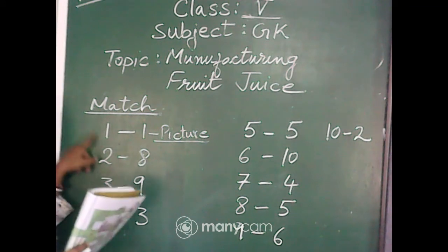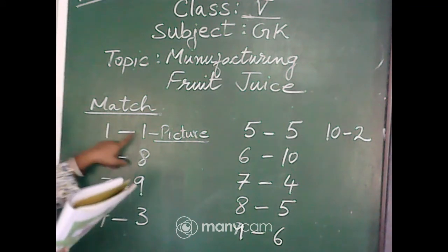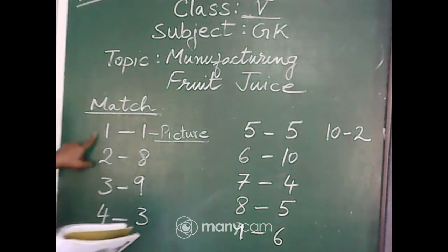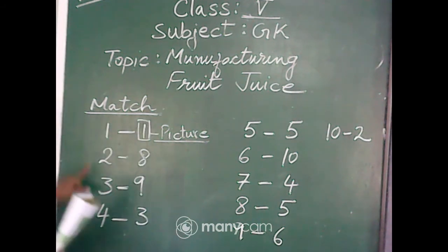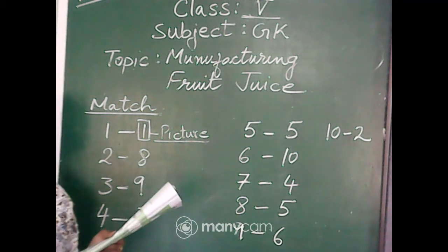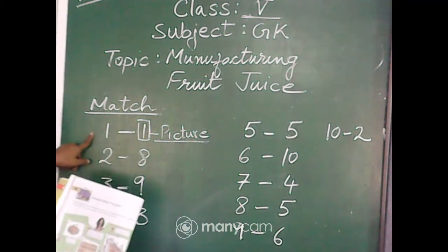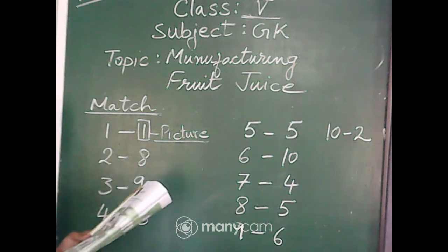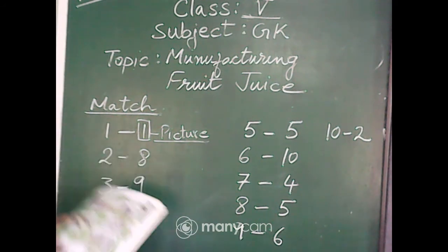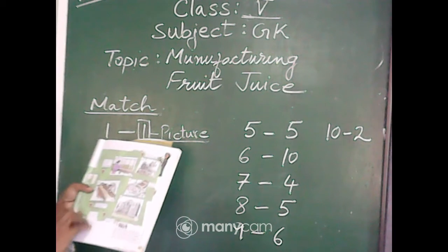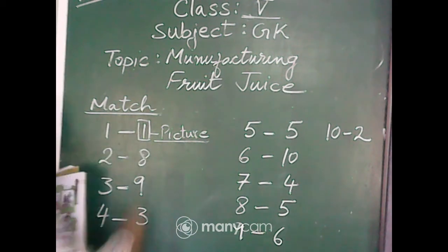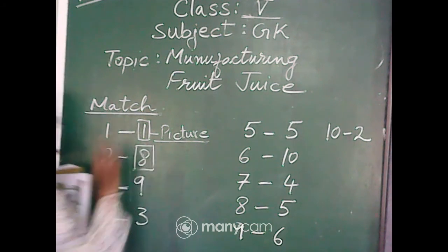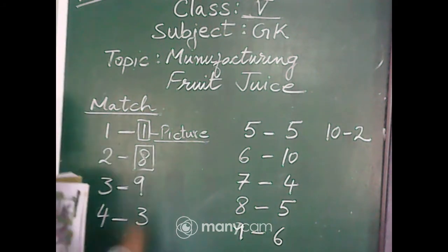So let's start. The first one is the first picture. The first one is fruit is harvested. Now number 2 is the 8th picture which you can see here, where the fruit is sorted and graded. Here the fruits are sorted and graded. Next comes number 3.